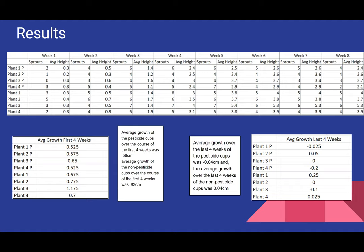Here you can see the Excel chart I created over the eight weeks. Each week I took measurements of the number of sprouts and the average height. Looking at the first four weeks, the average growth of the pesticide cups was 0.56 centimeters, while the average growth of the non-pesticide cups over the first four weeks was 0.83 centimeters.